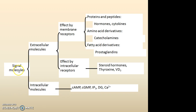An intracellular signaling molecule directly activates cyclic AMP — that is cyclic adenosine monophosphate — cyclic guanosine monophosphate, inositol 1,4,5-triphosphate, diacylglycerol, and calcium.